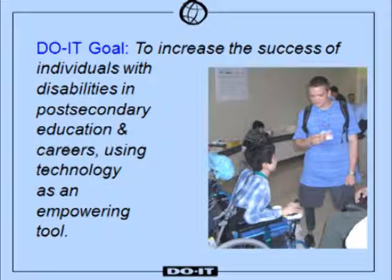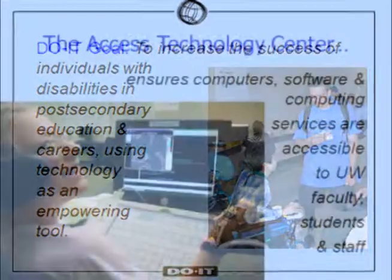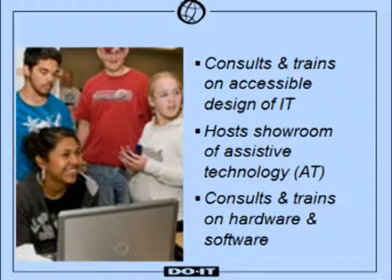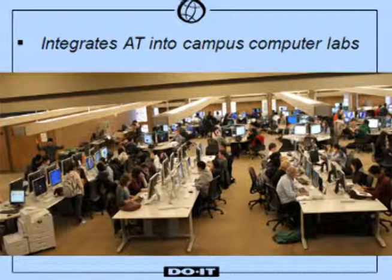To meet that goal, we have many activities in the United States and in Japan and other countries. The Access Technology Center ensures that computers, software, and computing services are accessible to UW faculty, students, and staff. In this center, we consult and train on accessible design of IT, host a showroom of assistive technology and ergonomic furniture, and integrate AT into the campus computer labs, making sure those facilities are welcoming and fully accessible to individuals with disabilities.